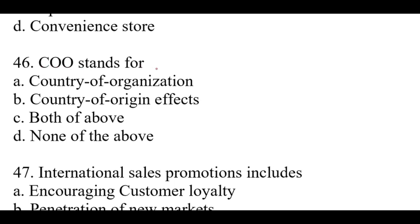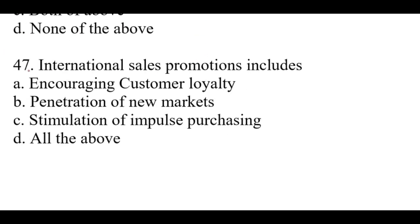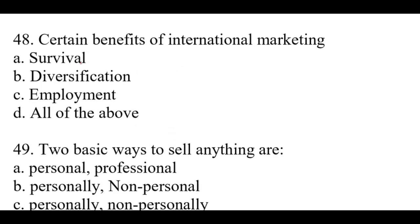Question number forty-six: COO stands for — right option is B: Country of origin effects. Question number forty-seven: International sales promotions include — right option is A: Encouraging customer loyalty. Question number forty-eight: Certain benefits of international marketing — right option is D, all of the above: survival, diversification, and employment.